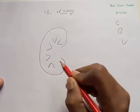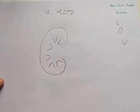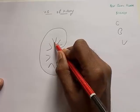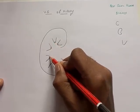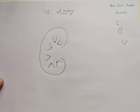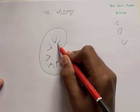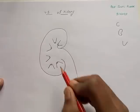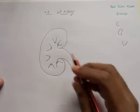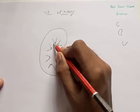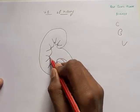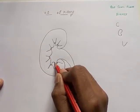Draw V shapes inside the C. These V shapes represent the renal pyramids, which are 8 to 10 in number. After drawing the V, put one small circle at the tip of each V — the circle indicates the opening of the collecting duct.